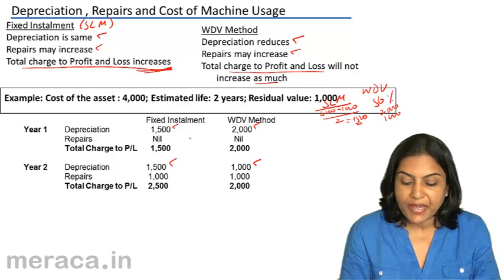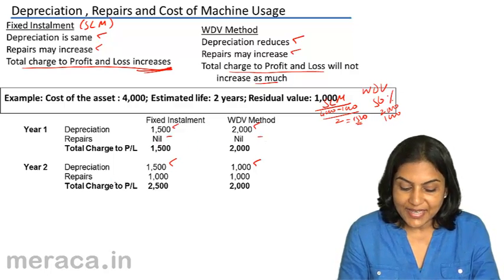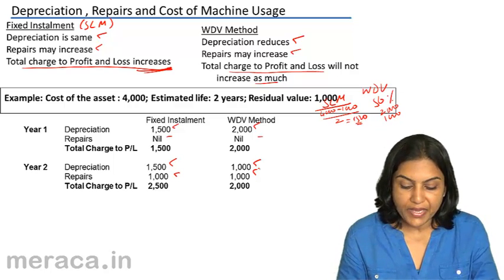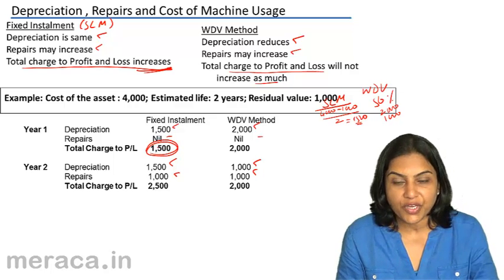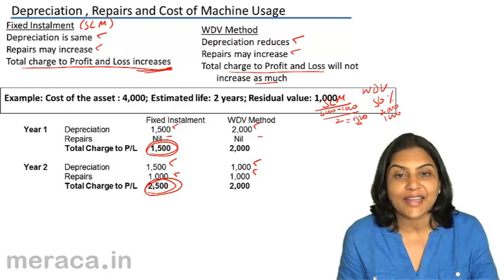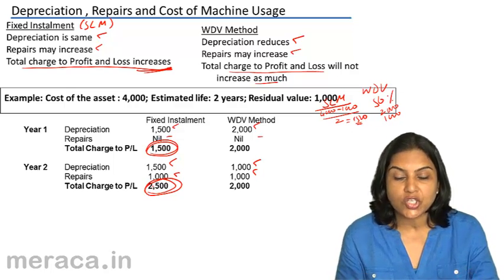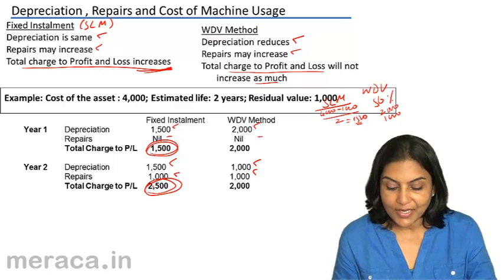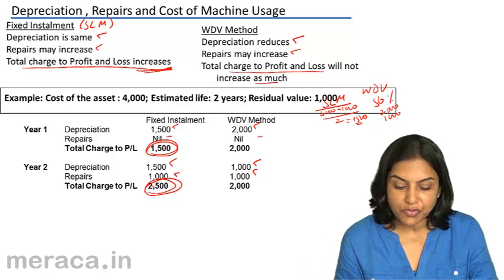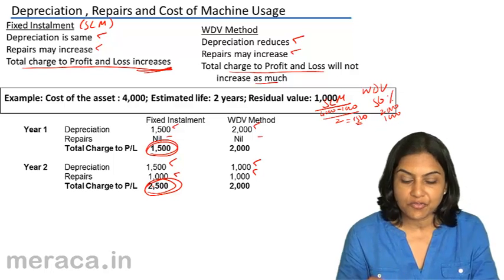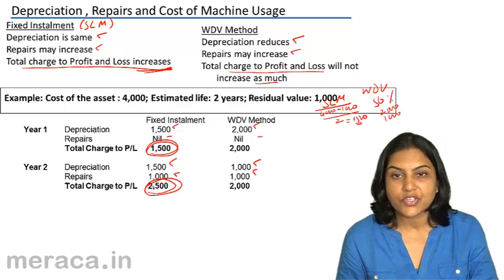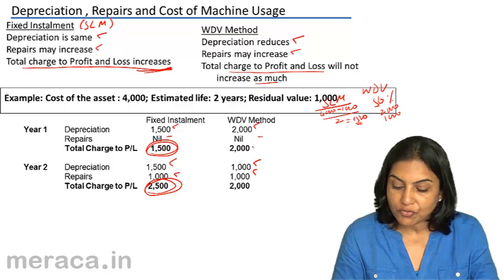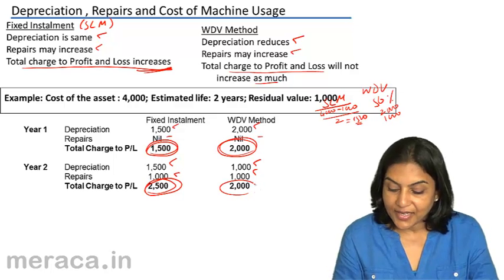Let us assume that there were no repairs in the first year. However, repairs in the second year were 1000. Therefore, the total of depreciation and repairs in the first year is 1500 under the fixed installment method, but 2500 in the second year. The total cost of machine usage — including depreciation and repairs — shows that the total cost has changed from 1500 in the first year to 2500 in the next year, which is a large jump. But under the written down value method, the total charge to profit and loss is 2000 in the first year and again 2000 in the second year.